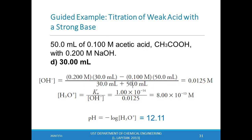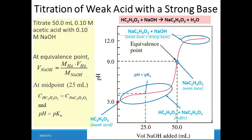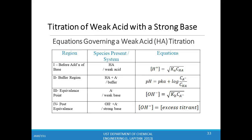After the equivalence point, the titrant is in excess and the mixture is a dilute solution of NaOH. We calculate pH using the same strategy as for strong acid/strong base titration, giving a pH of 12.11. The summary figure shows the different regions of the titration and the predominant chemical species in each region. Key equations for determining pH, hydroxide ion concentration, and hydronium ion concentration at each region are used for a weak acid titrated with a strong base.